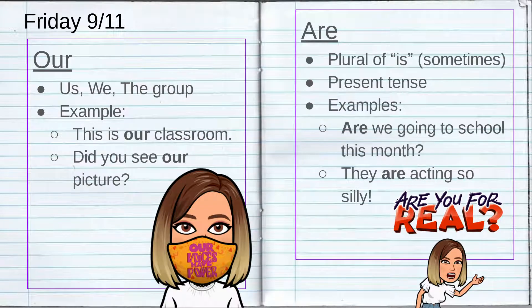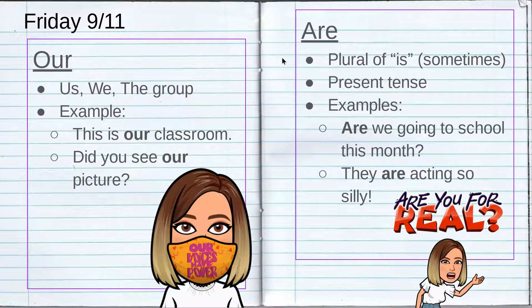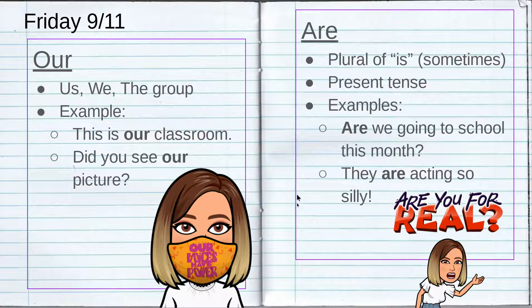The other form is 'are,' A-R-E. This one is plural for 'is.' It's the exact same meaning as 'is,' which is a verb — it's a form of being — but it's plural. Usually we use this when we're talking about multiple people. This is also present tense, so it's not for something that happened earlier or yesterday or last year, and it's not for something that's going to happen in the future. We're talking about right now. For example: 'Are we going to school this month?' — that's present tense, something I'm wanting to know right now.